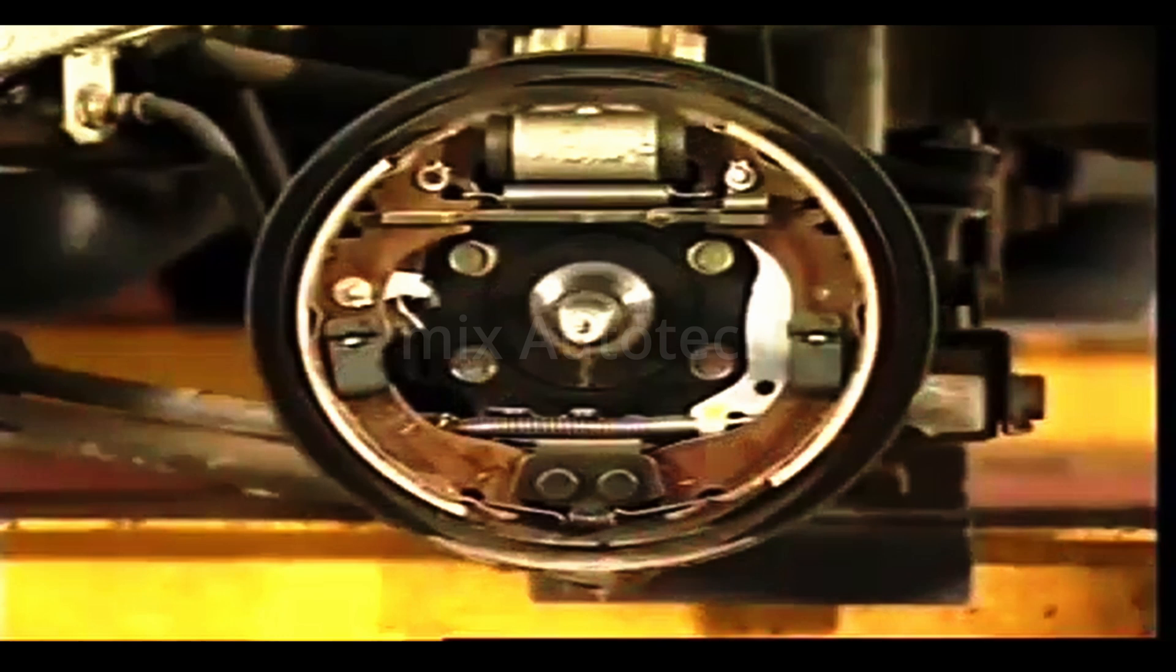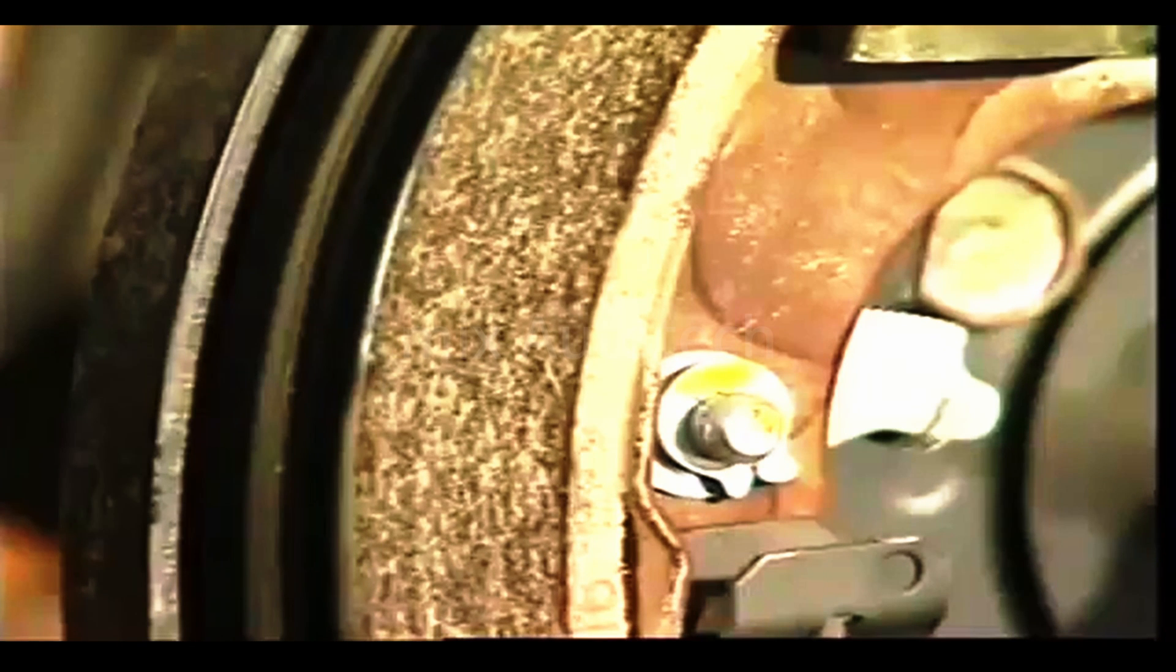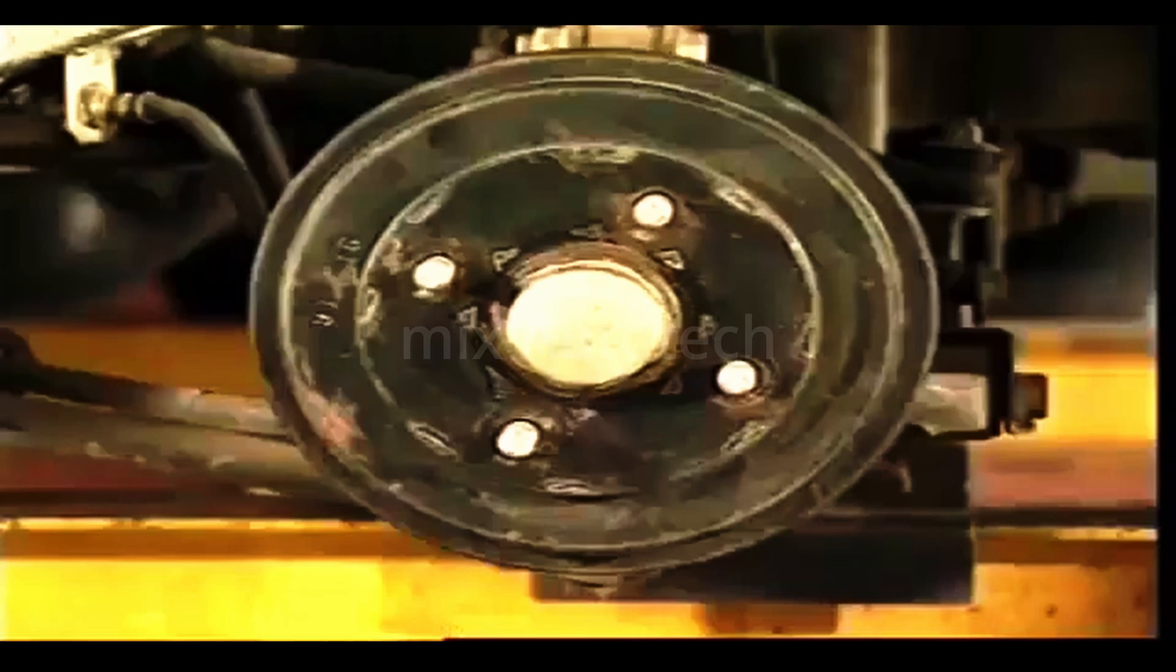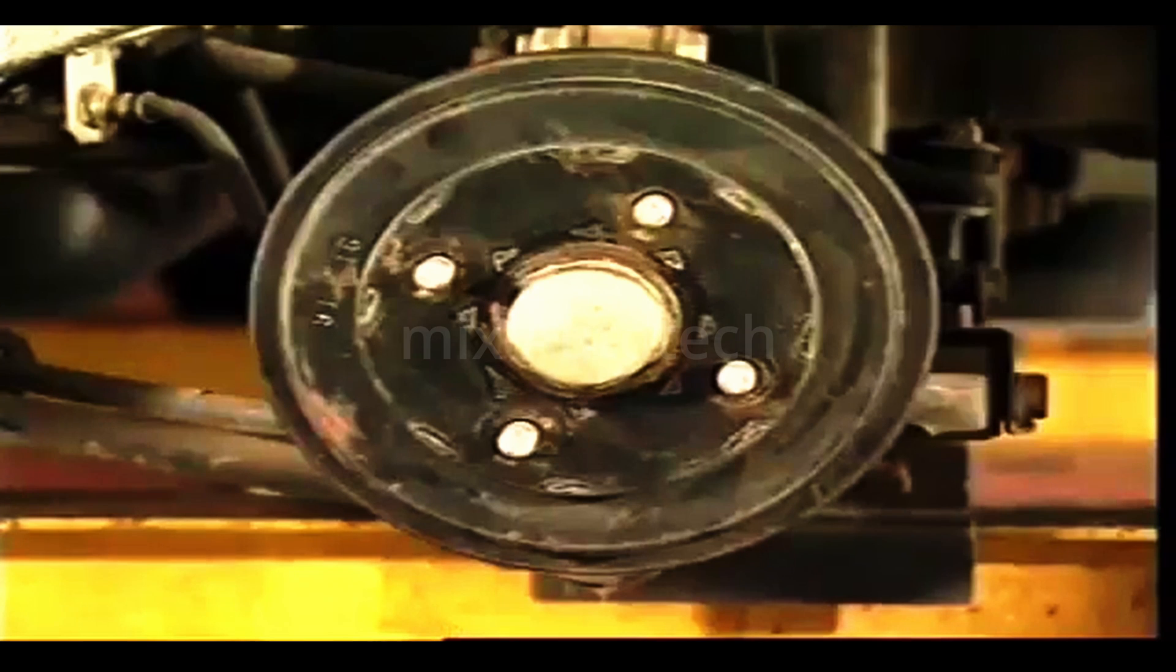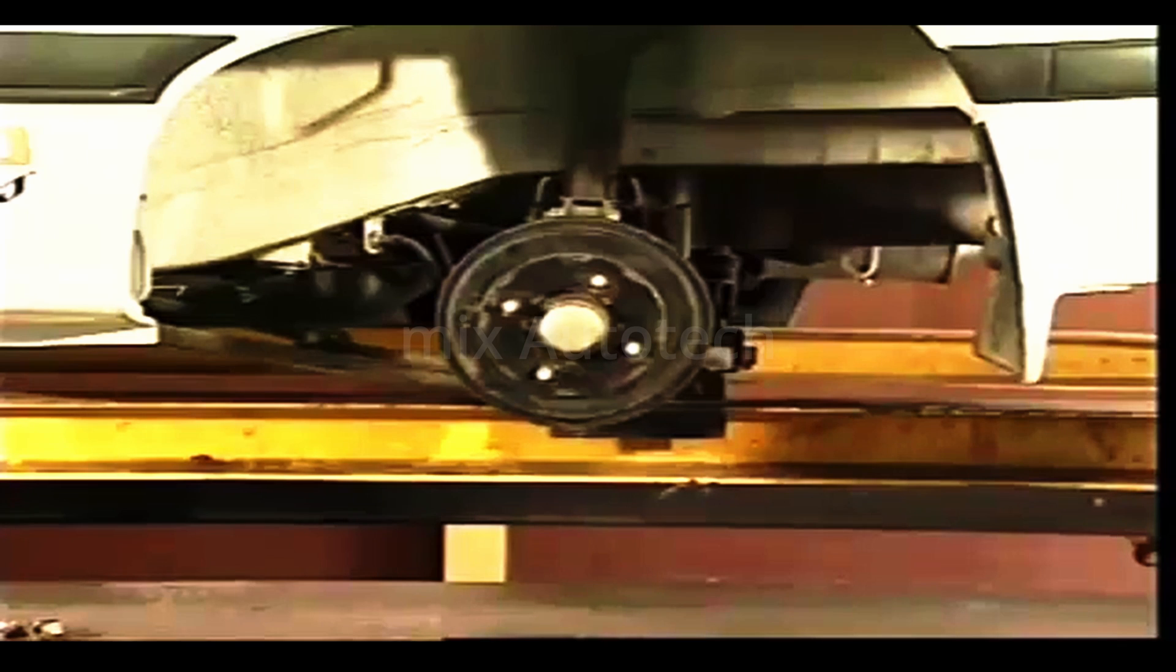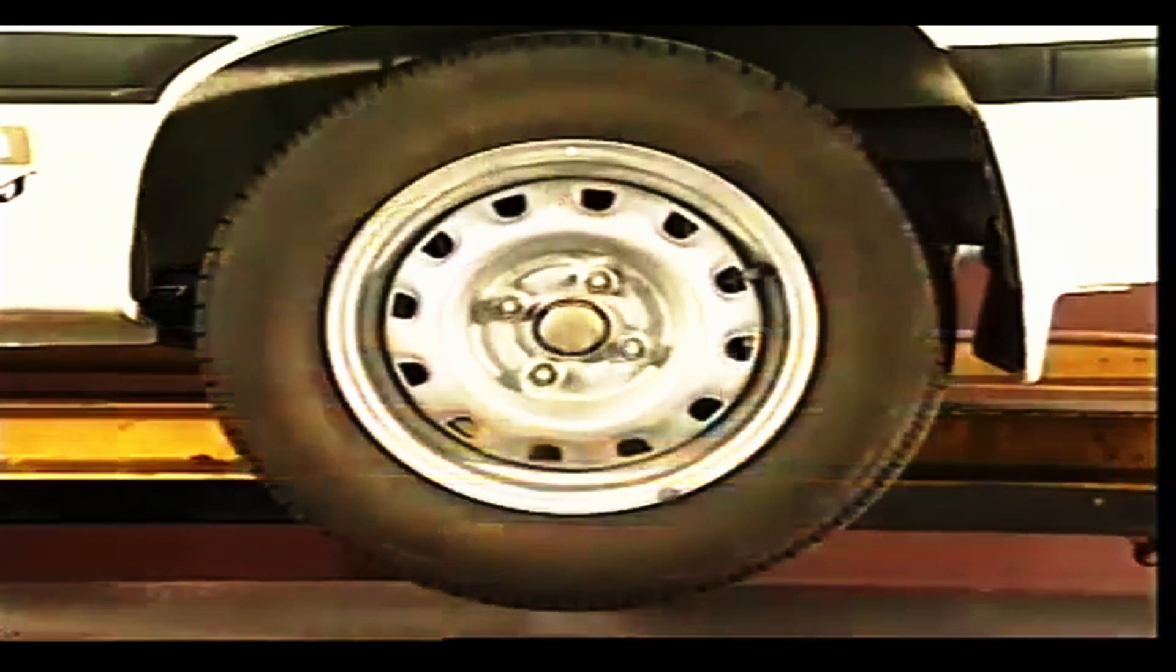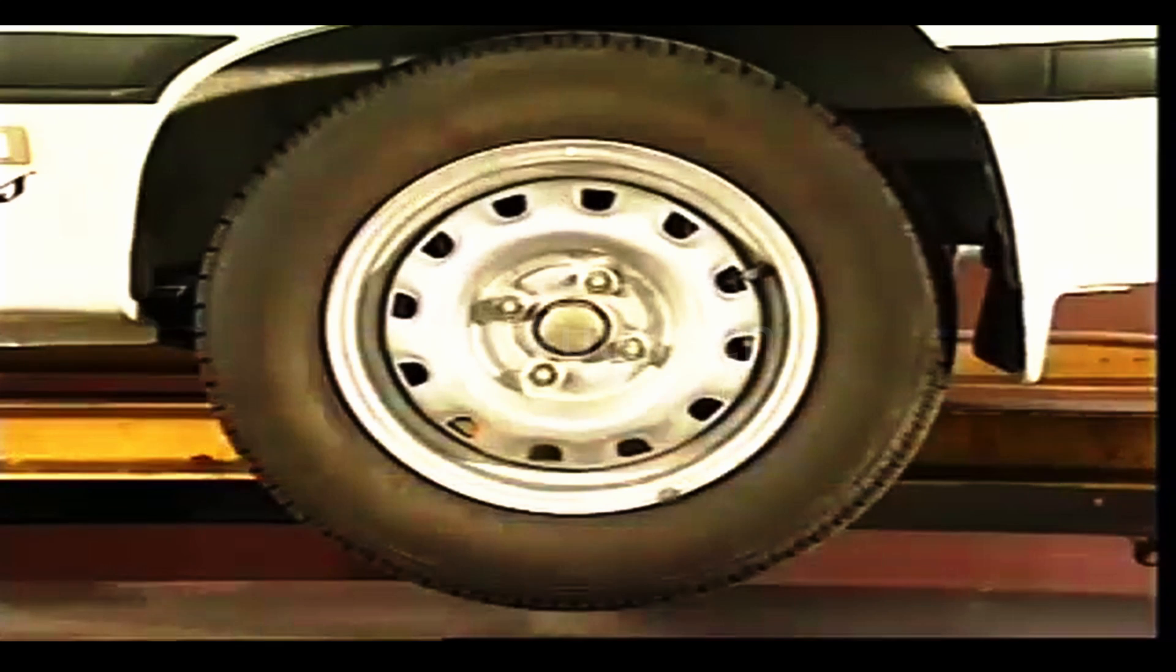The main disadvantage of drum brakes is that the friction area is almost entirely covered by lining, so most heat must be conducted through the drum to reach the outside air to cool. With hard use, this can cause overheating and eventually brake fade.